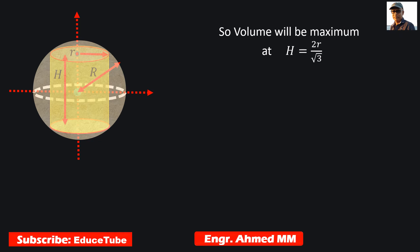Volume will be maximum at H = 2r/√3, because we already got the second derivative negative. Now substituting H = 2r/√3, we get maximum volume. We already got this equation in the previous slide, only we are replacing H by this.